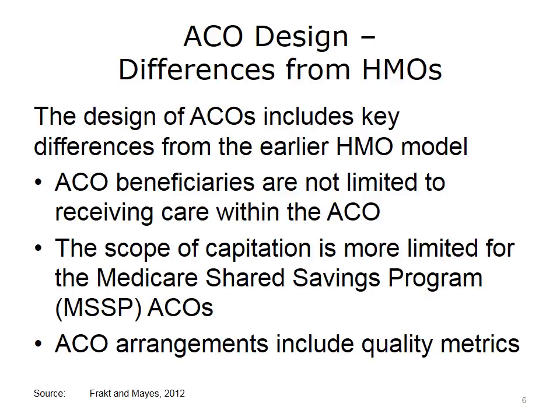Instead of full capitation, the Medicare Shared Savings Program ACO models use shared risk. Because providers are at risk for only a portion of the total cost of care, they do not face the same level of potential loss as with the HMO model. In addition, ACOs have to meet quality measures, which are intended to reward an ACO if it provides good care and penalize an ACO if it fails to provide the right care. Quality measures were not part of the HMO model. Part of the reason quality measures can be used in the ACO model has to do with technology changes between the 1990s and today — providers and hospitals are much more likely to have electronic health records, or EHRs. Providing quality measures in an EHR is much less time-consuming and labor-intensive than working through paper records.